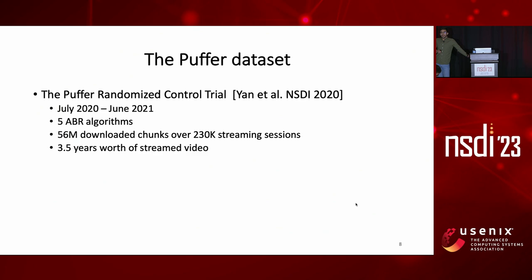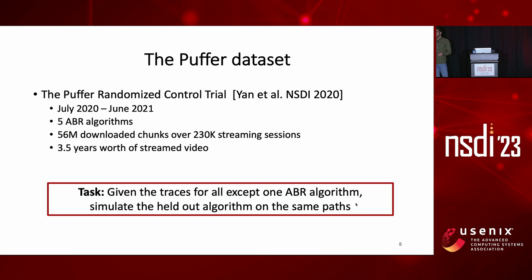To give you more insight, I'm going to use data from the Puffer dataset to do some analysis. Puffer is a real-world video streaming system deployed at Stanford, which does a continual randomized control trial over ABR algorithms, meaning that whenever a user logs in to watch free TV, an ABR algorithm is picked completely at random and assigned to this user, so that all ABR algorithms experience the same distribution of network conditions. This part of the dataset contains five ABR algorithms and more than three years worth of streamed video. The simulation task is to use traces for all but one of these ABR algorithms to simulate this held-out algorithm on the same set of network paths.